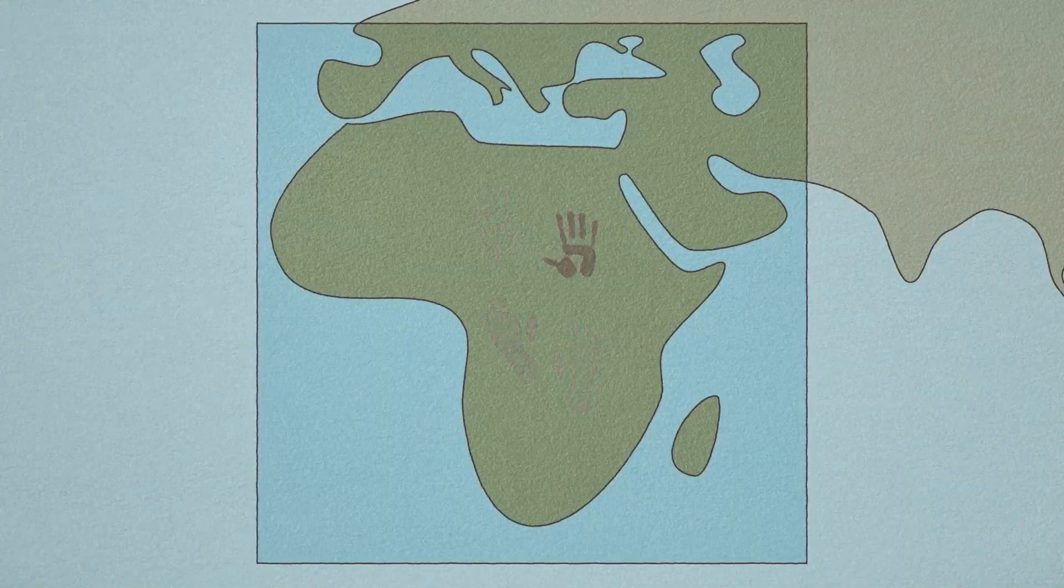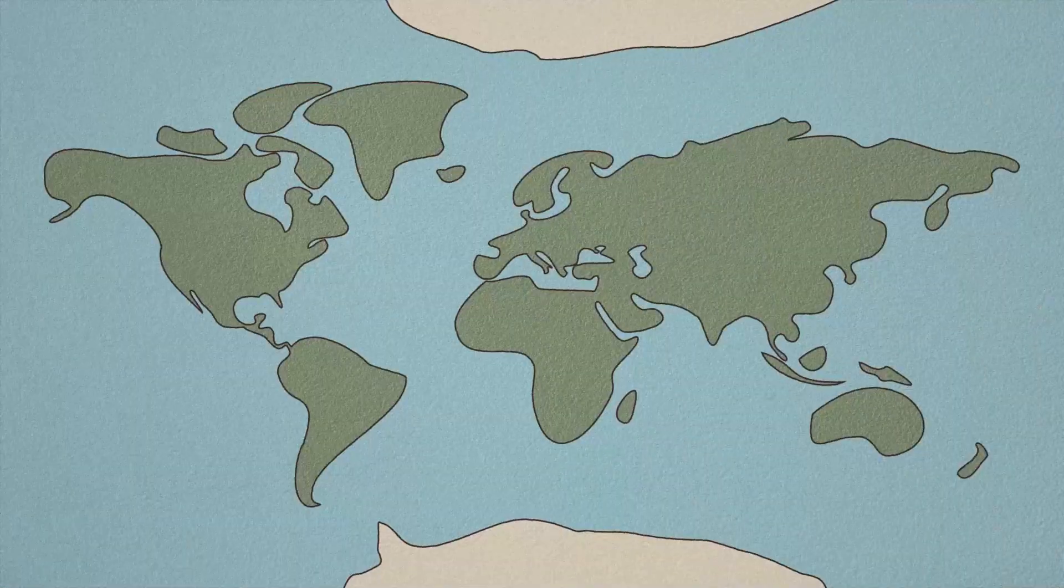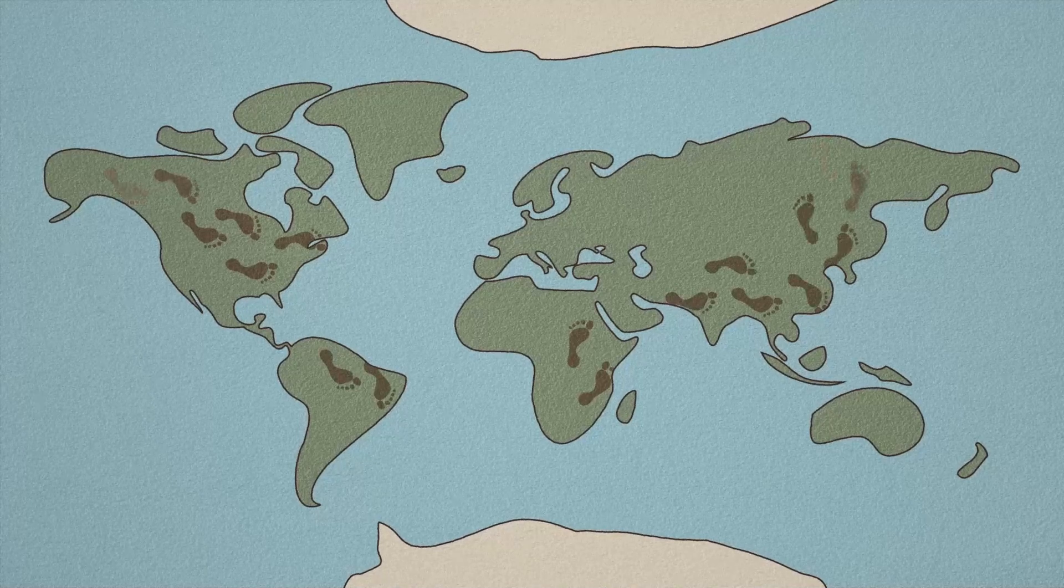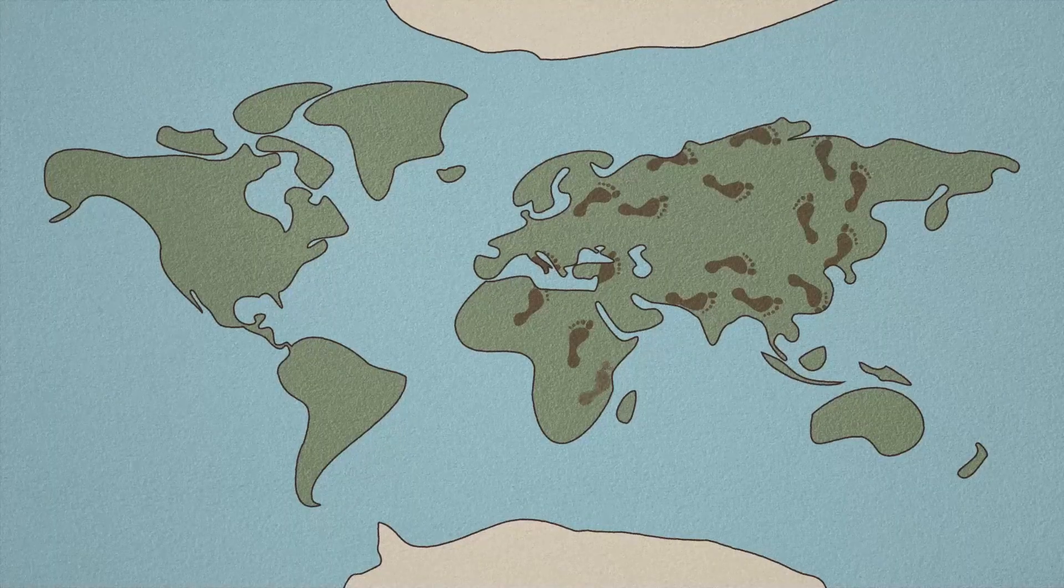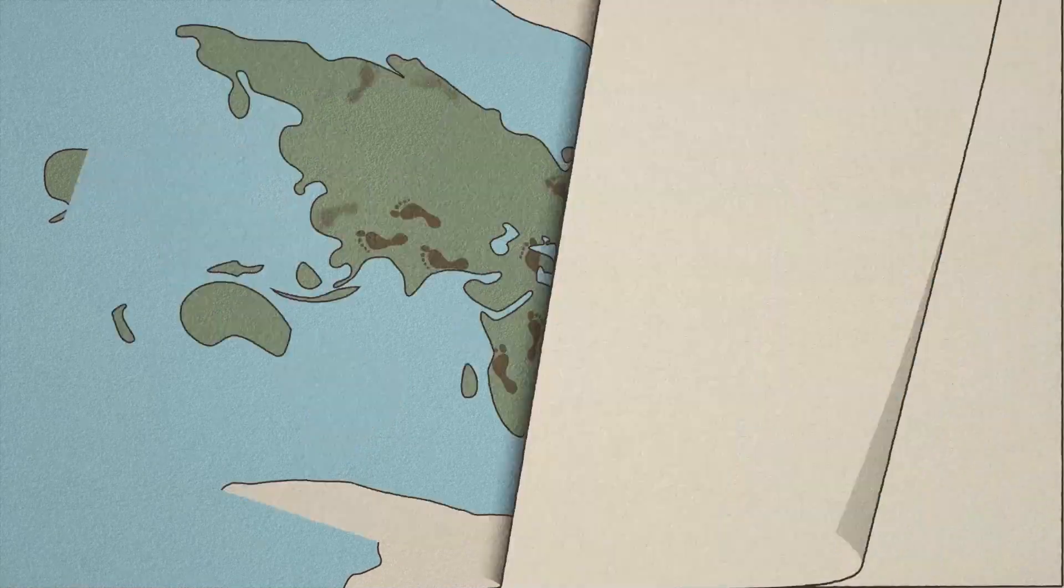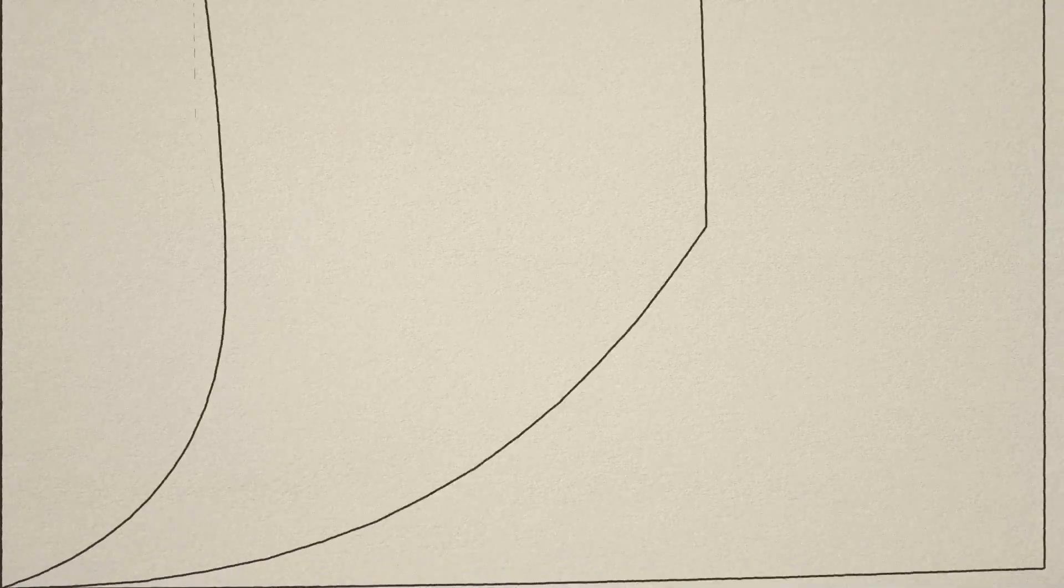There is still so much we have yet to understand about human evolution, about how we exchanged with one another as we migrated to new territories, about how we adapted to a changing climate over the past millions of years. But to understand any of this, we have to know precisely when all these events happened.